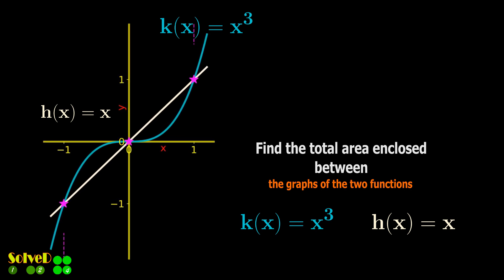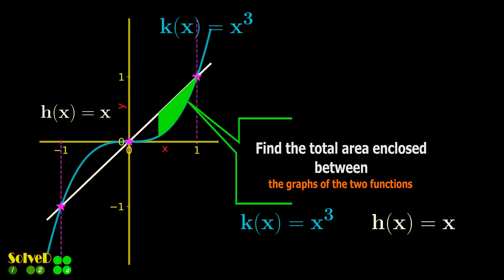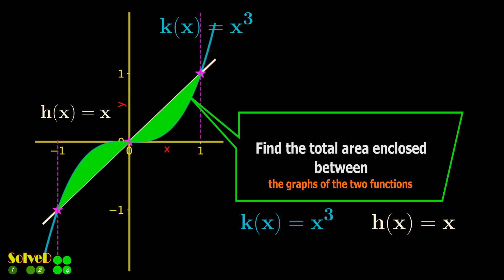Assuming we know the points of intersection, the task is to find the magnitude of this enclosed area shown by the green shade.